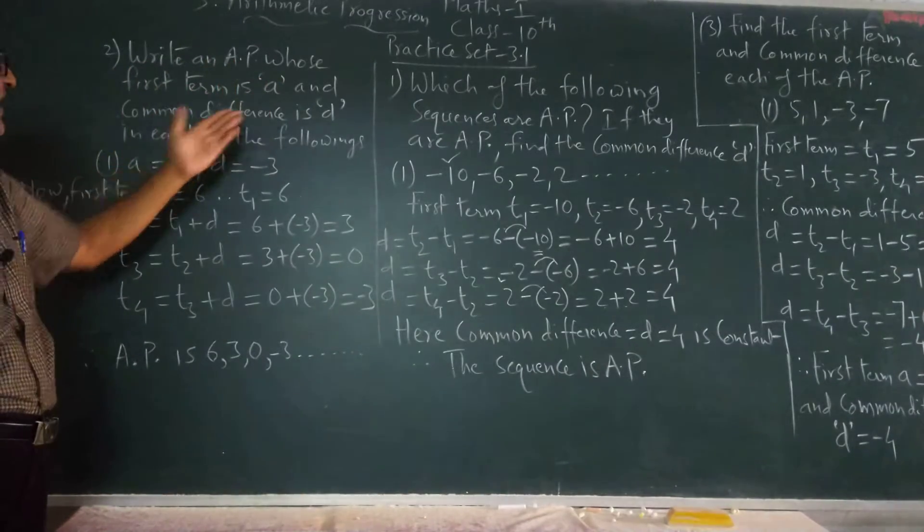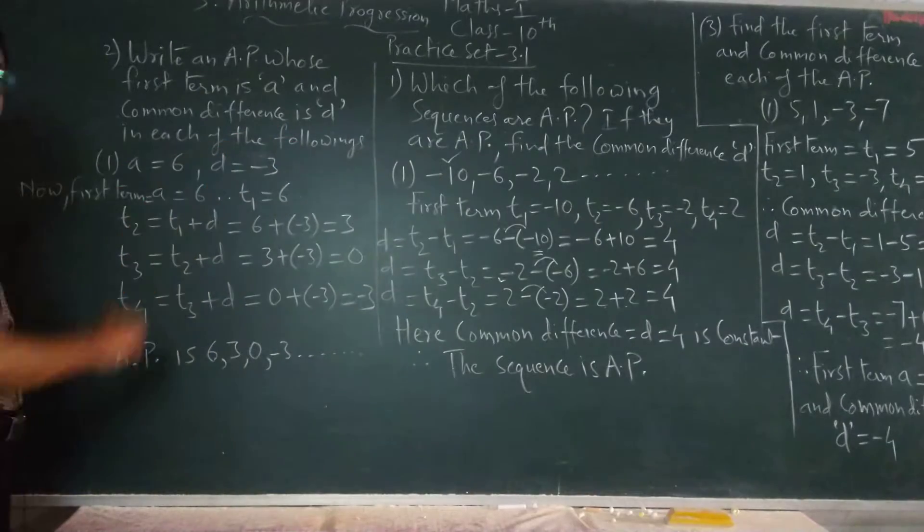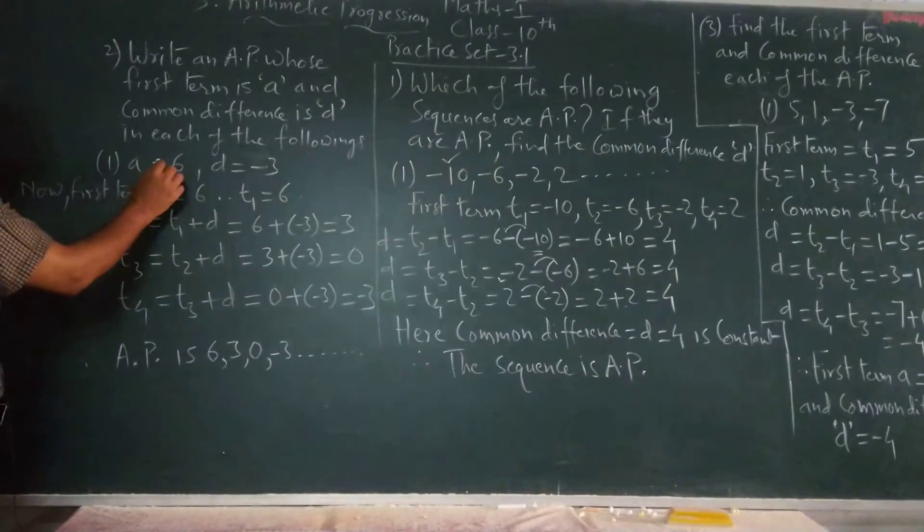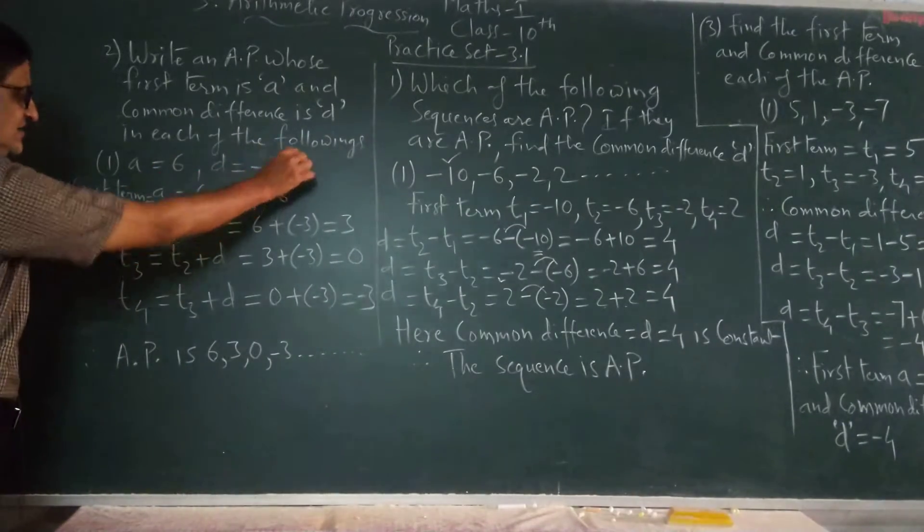Here is another problem and other type. An AP first term is a and common difference is d. a is equal to 6, d is equal to minus 3.